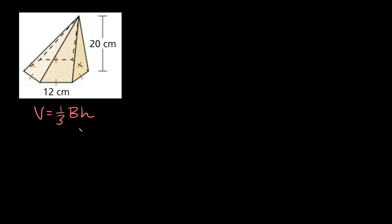So that's a regular hexagon. We're told that each side of this hexagon is 12 centimeters and that the height of the pyramid is 20 centimeters. The formula to find the volume of a pyramid is the same regardless — the volume is equal to one-third times the base times the height.